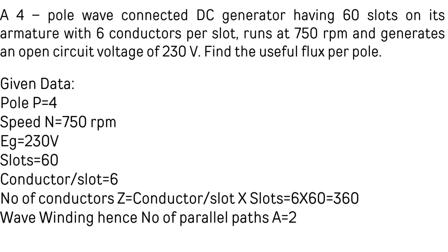Since there are four poles, P equals 4. The speed N equals 750 rpm and the open circuit voltage E equals 230 volts. The total number of conductors is obtained by multiplying conductors per slot by the number of slots: six conductors per slot multiplied by 60 slots gives 360 conductors.